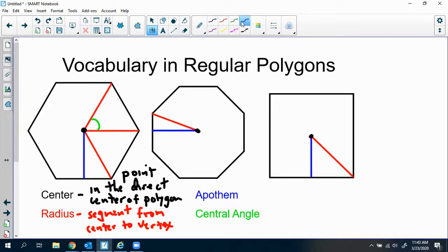The apothem, or apothem, is a segment from the center to the side, to any side. And it forms a right angle.